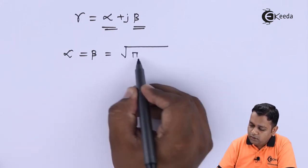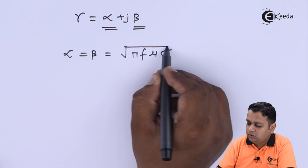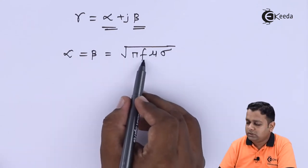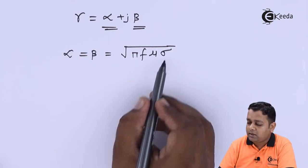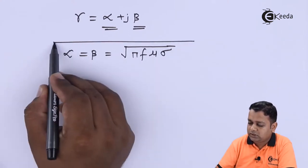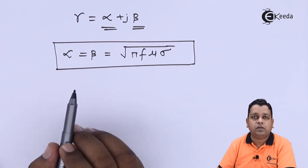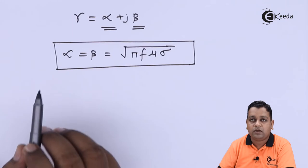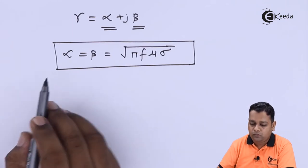For a good conductor, the attenuation constant alpha and phase shift constant beta are equal, and both are given by: α = β = √(πfμσ), where f is the frequency, μ is the permeability, and σ is the conductivity. This is a very important result for microwave propagation in a good conductor.